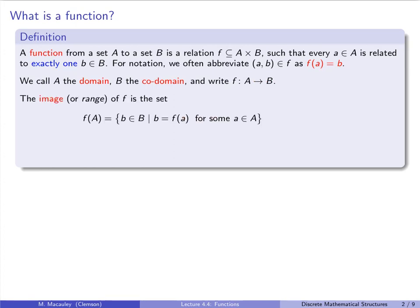The image or range of F is intuitively the set of everything in B that gets hit by F. So F(A) is one way to write that — it's what we get by applying the function to the entire set. It's the set of all b in B such that b = F(a) for some element a in the domain, or equivalently the set of all elements of the form F(a) for a in the domain.